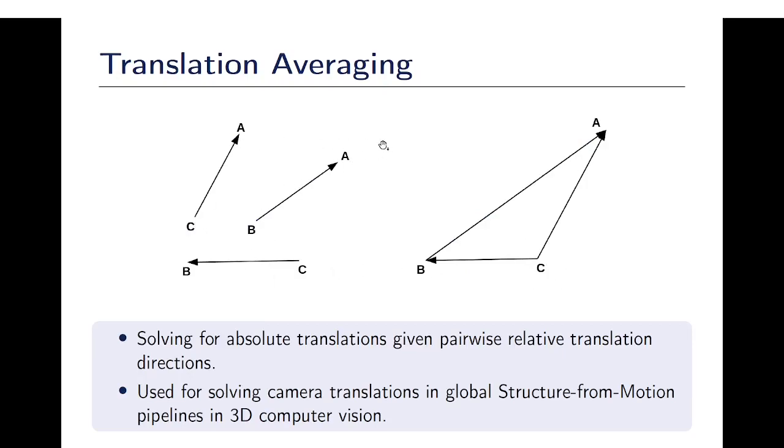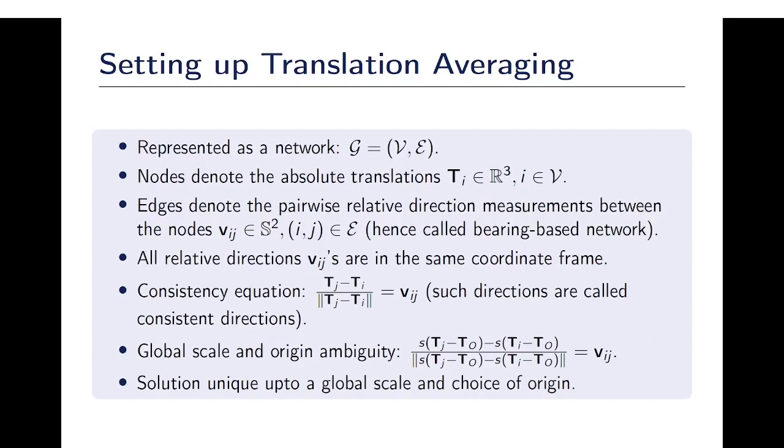It can be used for solving camera translations in global structure-from-motion pipelines in 3D computer vision. The problem can be represented as a network where each node represents absolute translations and each edge represents relative direction between the nodes.